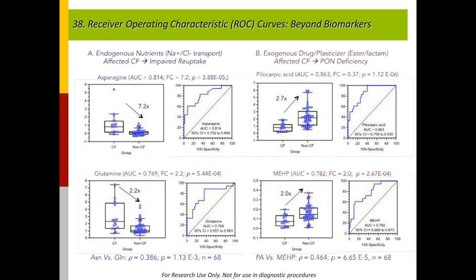To summarize: of the four lead compounds in sweat shown to differentiate CF from non-CF infants, two compounds—asparagine and glutamine—are endogenous metabolites or nutrients likely co-transported by sodium- or chloride-dependent transporters, with decent discriminatory potential at an AUC a little above 0.75. What was really interesting are these two exogenous compounds: pilocarpic acid and MEHP, the plasticizer metabolite, which we discovered were consistently lower in CF sweat samples compared to non-CF cases. Both pilocarpic acid and MEHP are well correlated with each other from a Spearman rank correlation plot, leading us to deduce they are likely metabolized by a common enzyme.